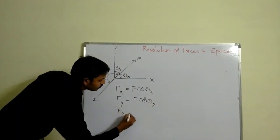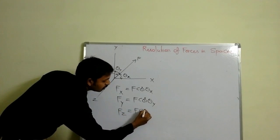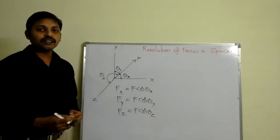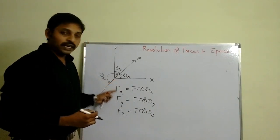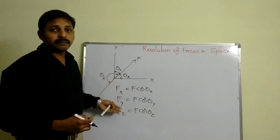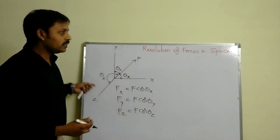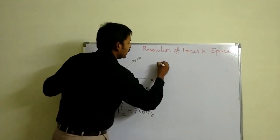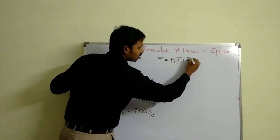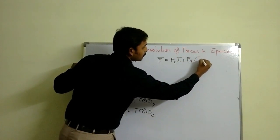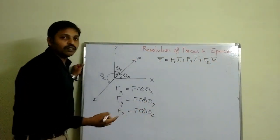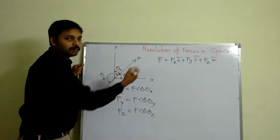Similarly, Fz = F cos theta_z. By considering these magnitudes, I can express the force in the form of a vector: F-bar = Fx i-bar + Fy j-bar + Fz k-bar. This is the expression of force in vector form.